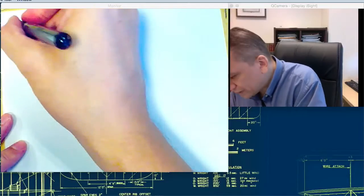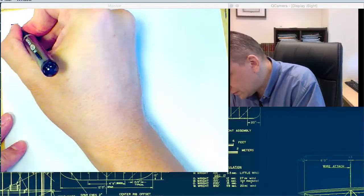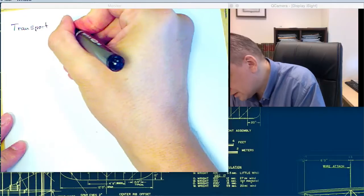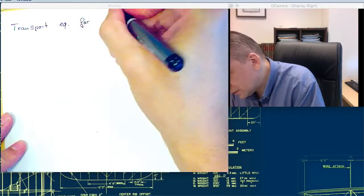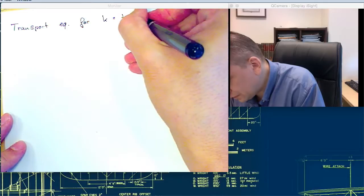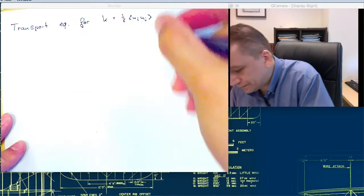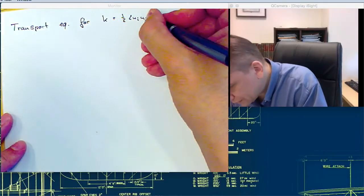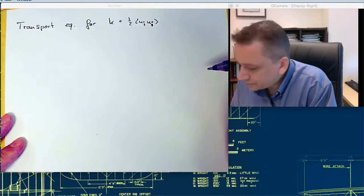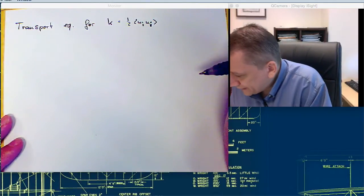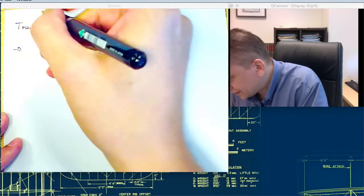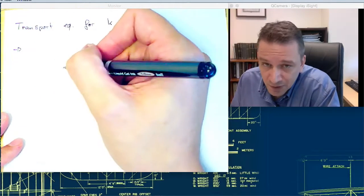So we would like to have now a transport equation for the turbulent kinetic energy, K, which is one-half ui ui. And essentially this energy equation is derived very similar to the mean energy equation.